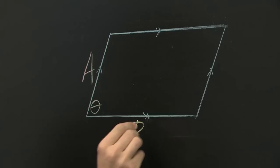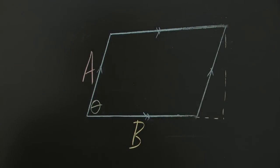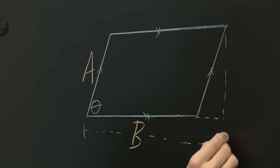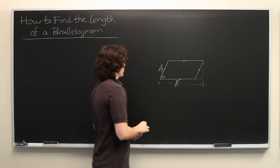What we want to find is this length here from the bottom left corner all the way out to here. So how are we going to do this?